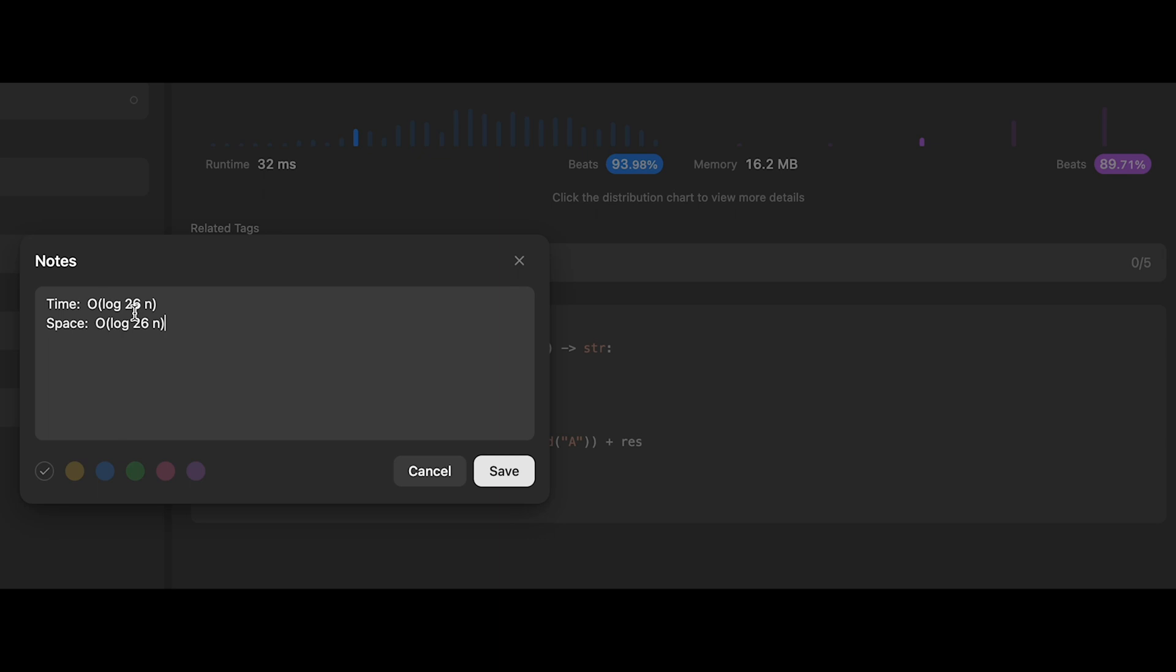And the time complexity of this solution should be order of log base 26 of N, where N is the given column number. That's because we continuously are dividing the number by 26 until the number becomes zero.